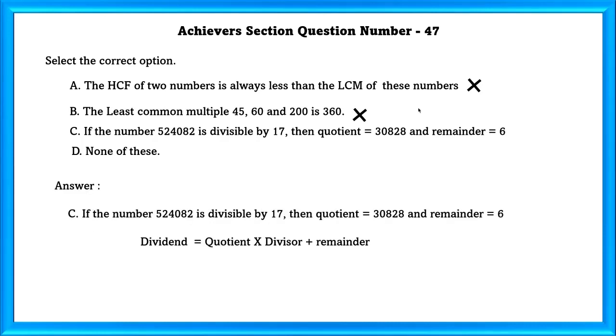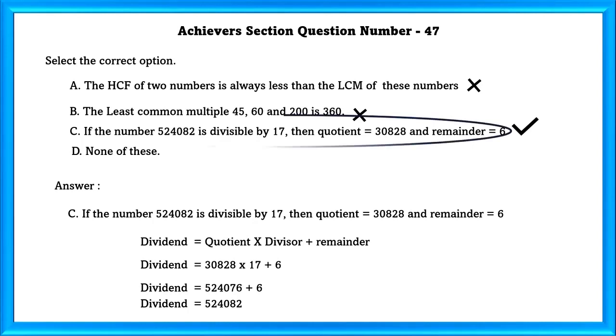Option C: If the number 524082 is divisible by 17, then quotient is equal to 30828 and remainder is equal to 6. Now, we're going to check this. For checking, the formula is dividend equal to quotient into divisor plus remainder. If we check with the formula, this statement is correct. Answer is C.